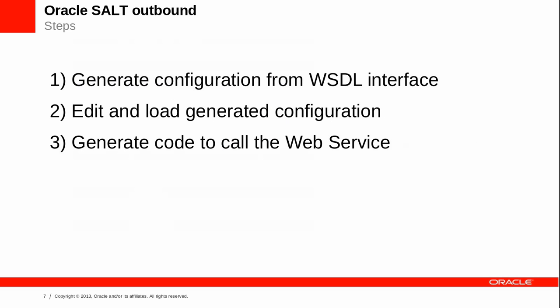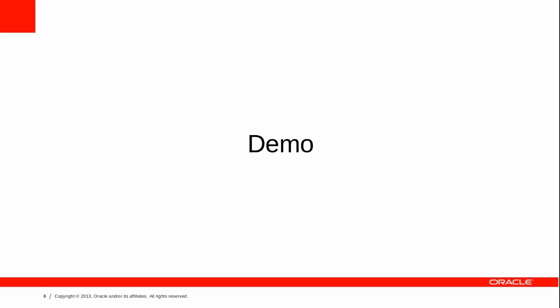The following steps are used to call an external web service from a Tuxedo application. WSDLCVT is used to convert web service interfaces into Salt configuration files. Then we edit the configuration to reference the previously generated configuration files or artifacts into the application. An optional step can be performed to generate the code for the program that is going to invoke the web service. And now let's do a demonstration.